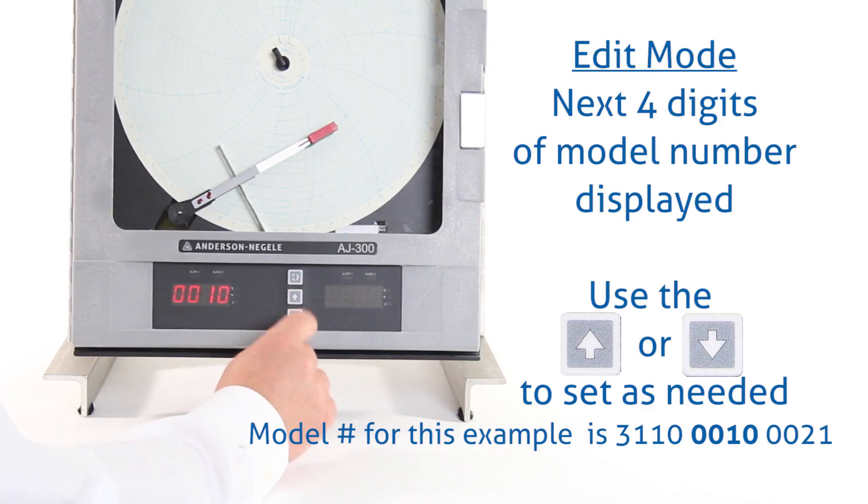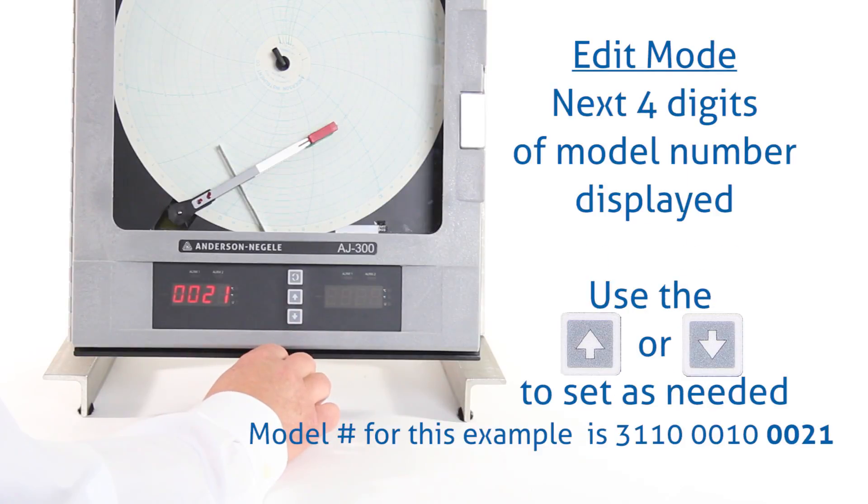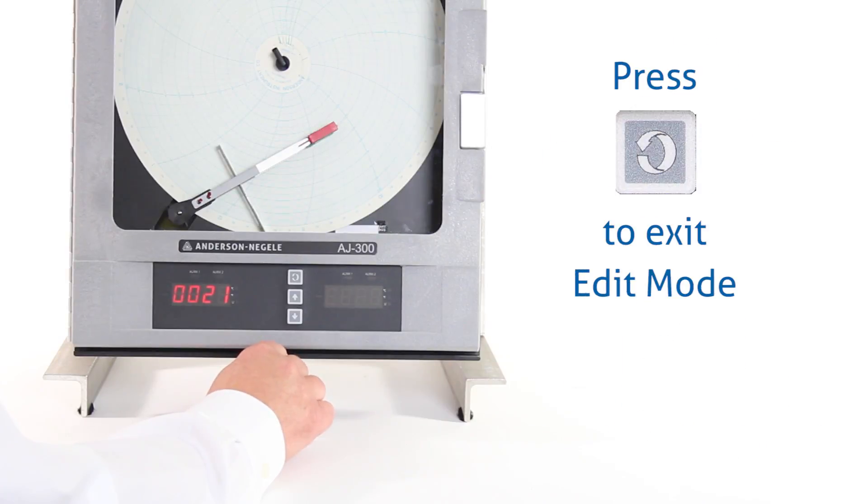Once they're correct, I press the scroll key and it goes to the next set of four digits. If they need to be adjusted, I would use the up or down arrow keys. In this case, the 0021 is correct for my model number. So I'm going to press the scroll key. And once again, I can just let the recorder complete its startup sequence. And at that point, it'll be ready to be reprogrammed.